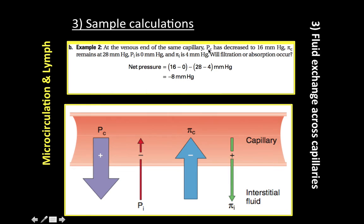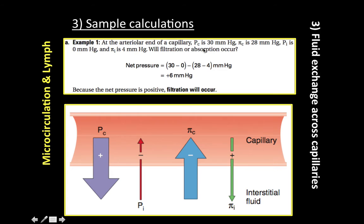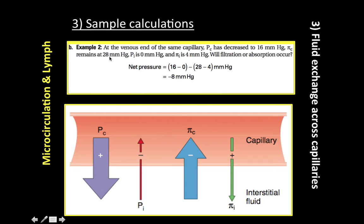Now the venous end of the same capillary: PC has decreased to 16 mmHg, Pi C remains at 28 mmHg, PI is 0 mmHg, and Pi I is 4 mmHg. Plugging in: (16 - 0) - (28 - 4) = negative 8. Because the net pressure is negative, absorption will occur.